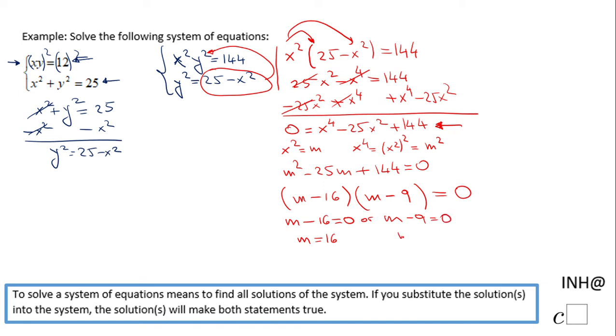But don't forget, m is nothing else than x squared. So we have x squared equals 16, and that will give us x equals plus or minus square root of 16, and we have two solutions here, plus and minus 3.